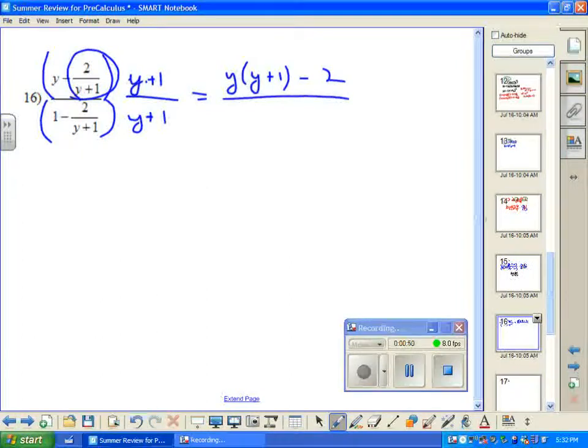And something similar happens in the denominator here. I take 1 times y plus 1. That's just y plus 1. And then when I take and multiply the y plus 1 times this minus 2 over y plus 1, the y plus 1s cancel. I'm just left with minus 2.